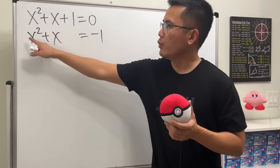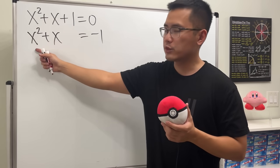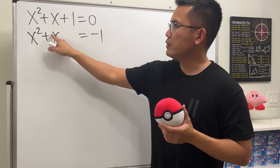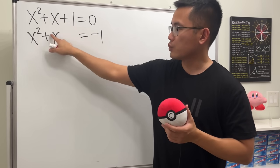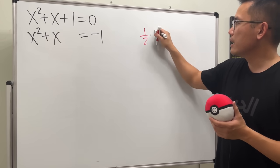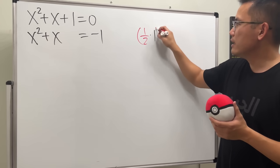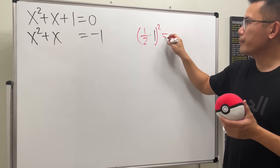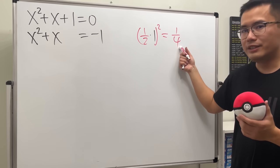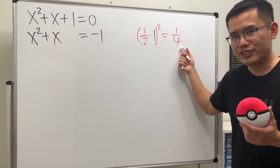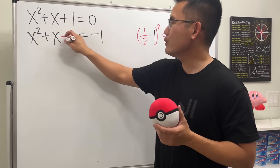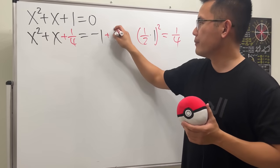For completing the square, we first make sure we have a one in front of x squared, which we do. Then we take the coefficient of x, which is one, take half of that, and square it. We get one over four — this is the magic number. Now we add it to both sides.